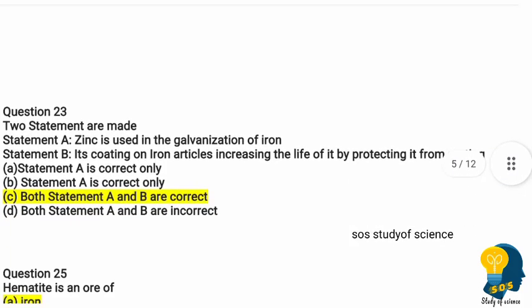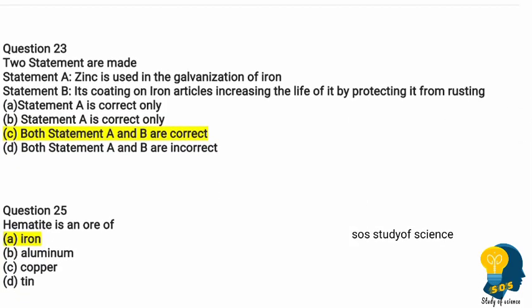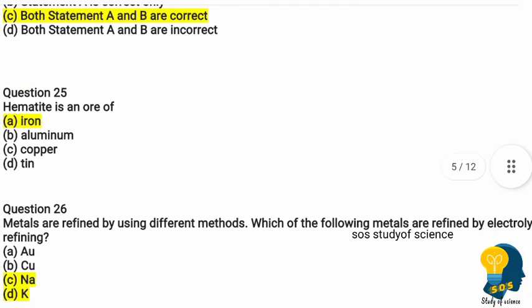Question twenty-three: statement A is zinc is used in the galvanization of iron. Statement B is its coating on iron articles increases the life of iron by protecting it from rusting. Which statement is correct? Option C — both statement A and statement B are correct.